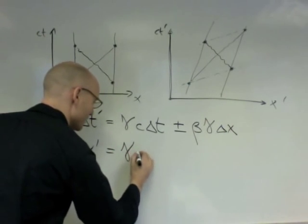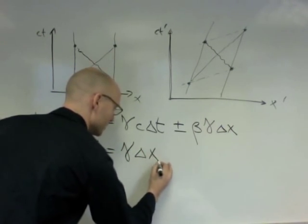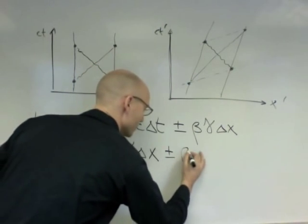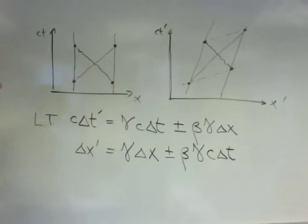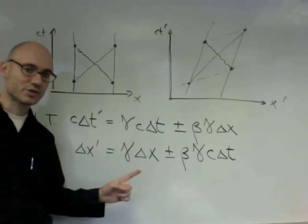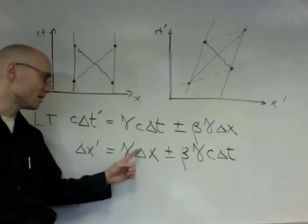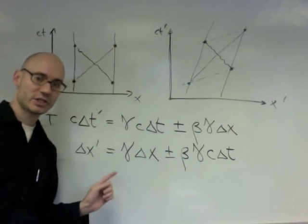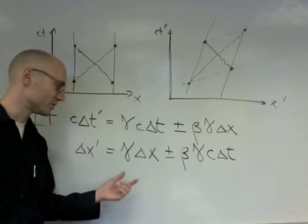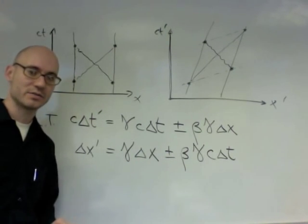And here, it looks just the same, but with everything reversed, delta x plus or minus beta gamma c delta t. And this is a linear transformation in the sense that the new coordinates are just linear combination of the old coordinates. You just multiply by constants and add or subtract them.